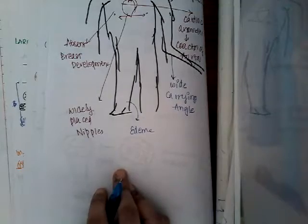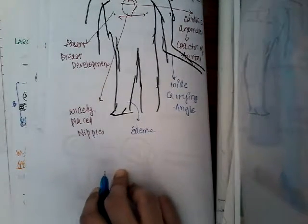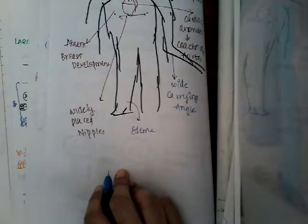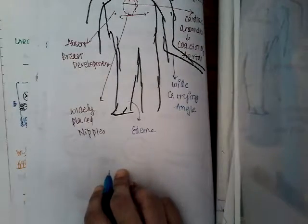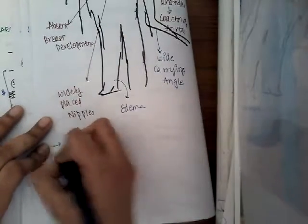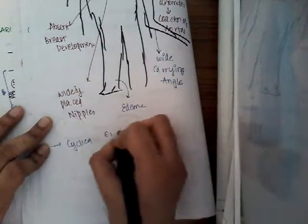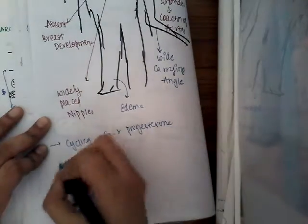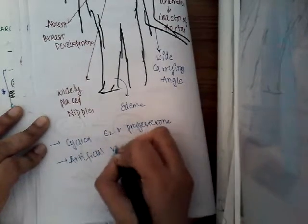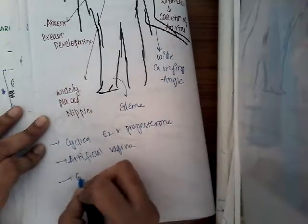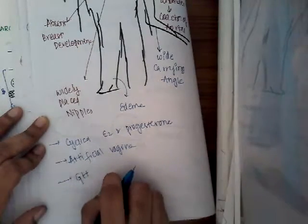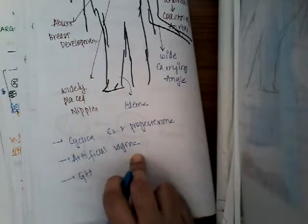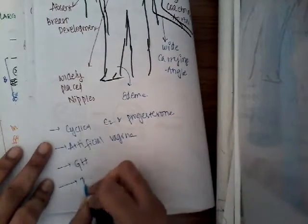Diagnosis is by karyotyping. Treatment involves giving cyclical estrogen and progesterone therapy, which will promote feminization, cause the appearance of secondary sexual characters, and prevent osteoporosis. We also need to create an artificial vagina, which will help in sexual function. Growth hormone is given to promote growth. If she wants to get pregnant, pregnancy can be attempted with a donor egg with IVF.